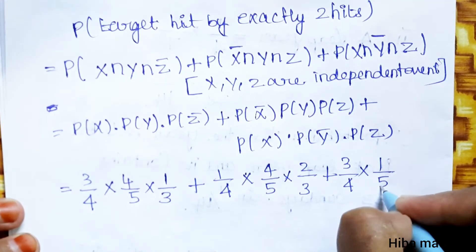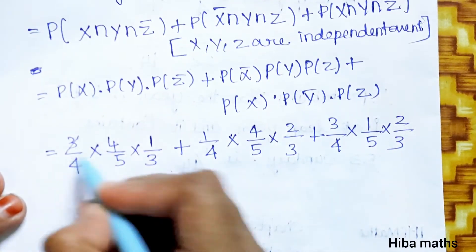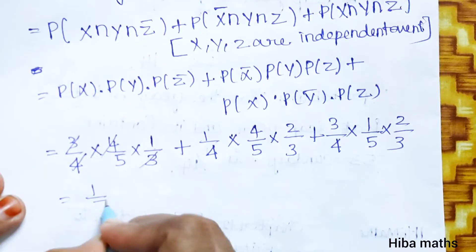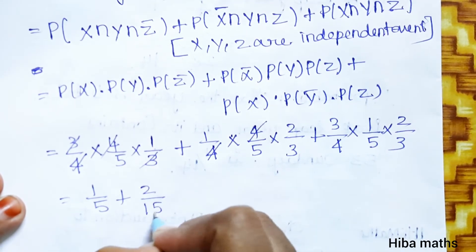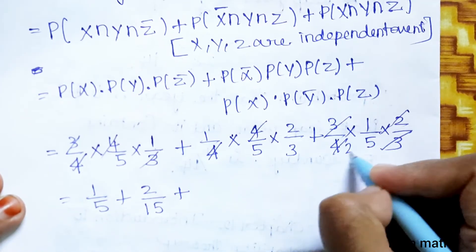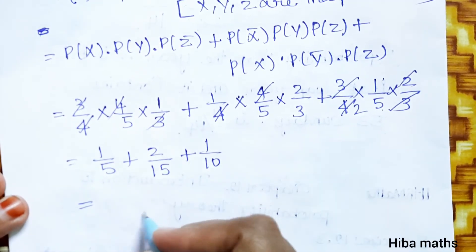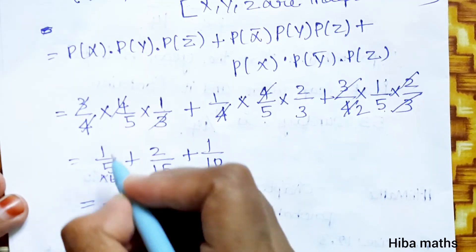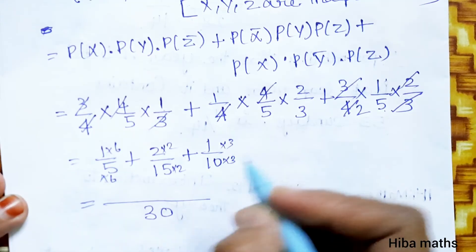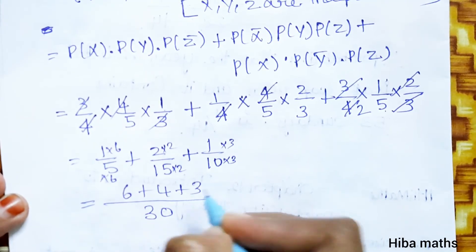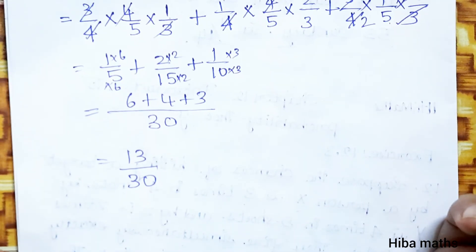Computing with denominator 30: the terms give 6 plus 4 plus 3, which equals 13. So the answer is 13 by 30. Thank you so much for watching.